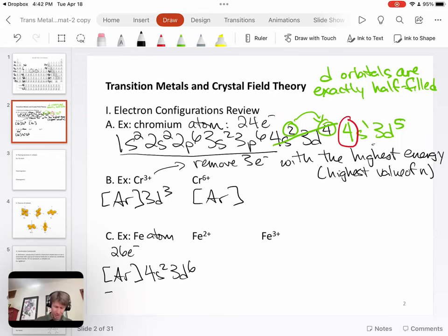You could also write it with the 3D6 and then the 4S2. Either of those are fine answers. The reason to write the 3D6 first would be that the 3D6 electrons are lower in energy than the 4S2, and that might help you to remember to take them away first.